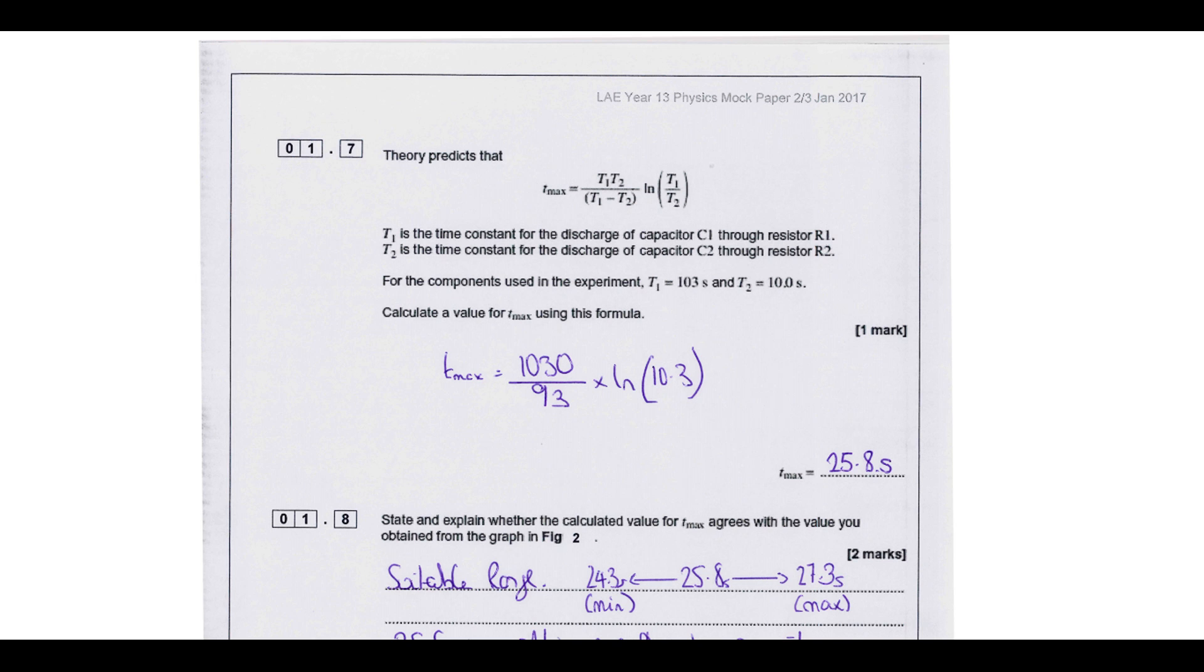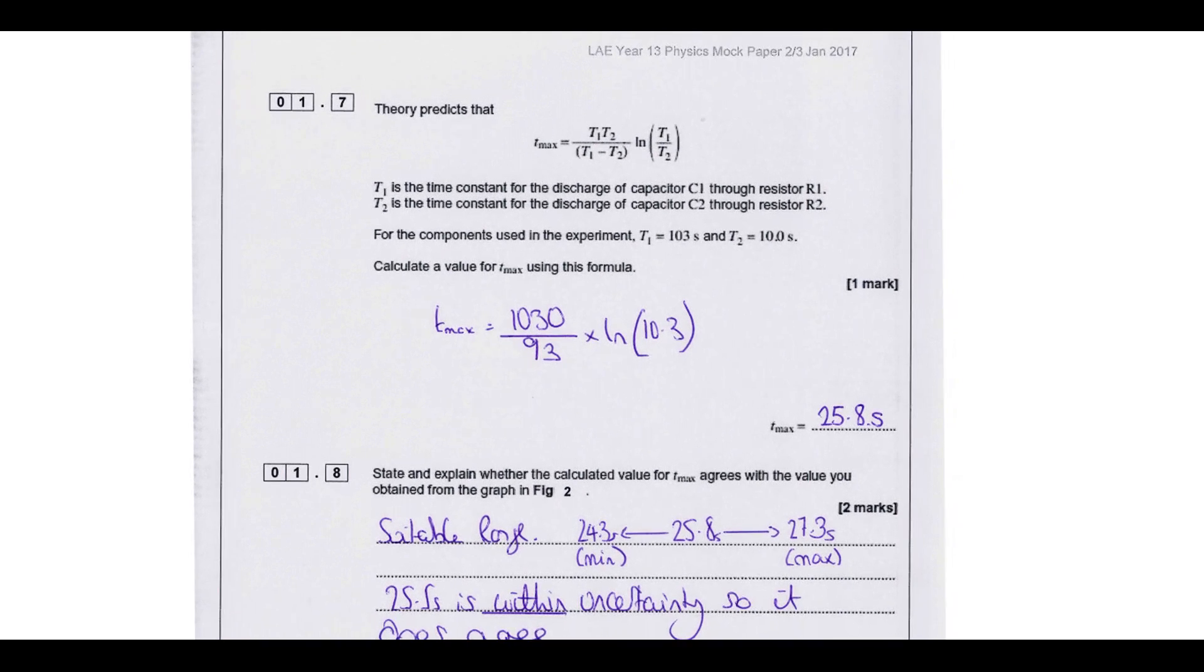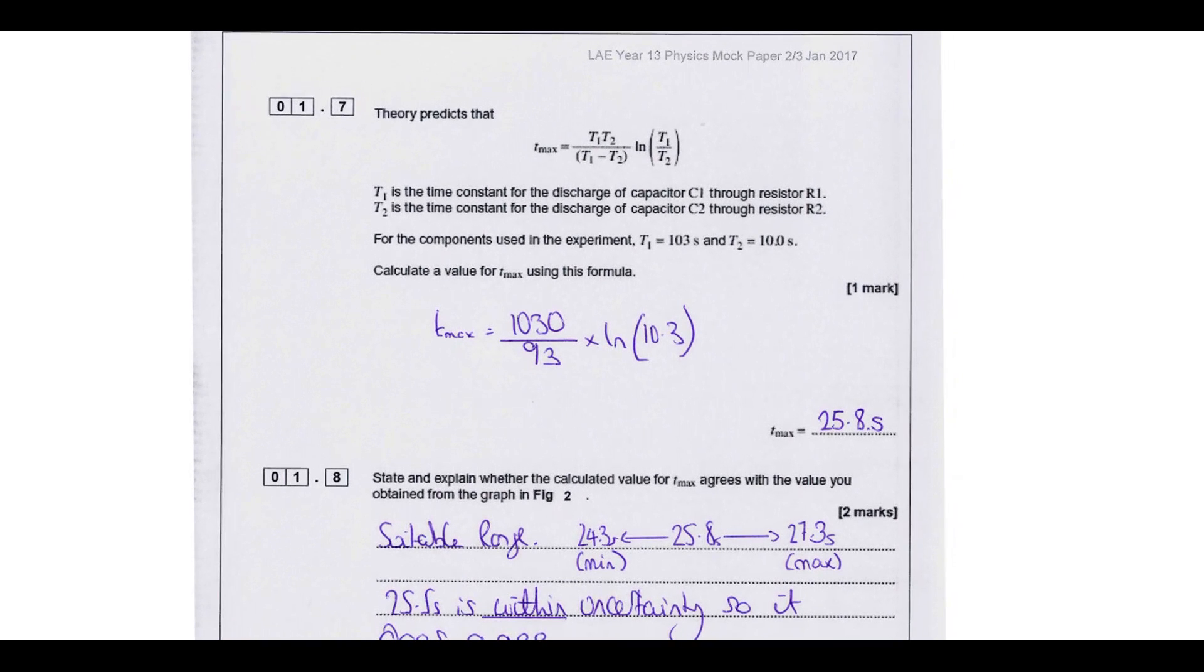Then we've got a question looking at some theory to do with the graph. So we've got an equation that is suggested for calculating t max, so all you had to do is put some values in and calculate the answer. Loads of people forgot to give a unit for this one and threw away a really easy mark. Shame on you really. Forgetting units is a rookie mistake.